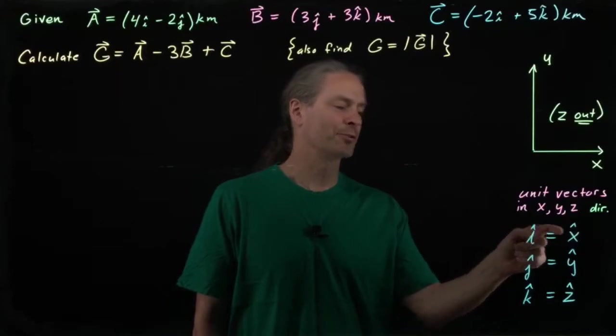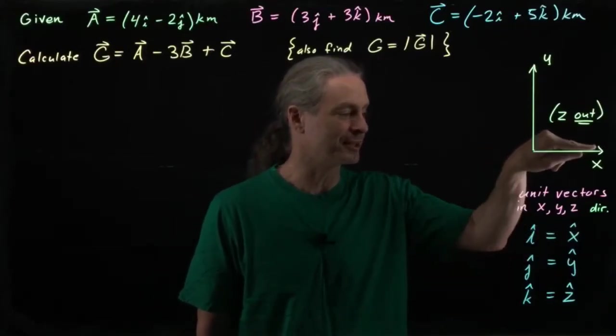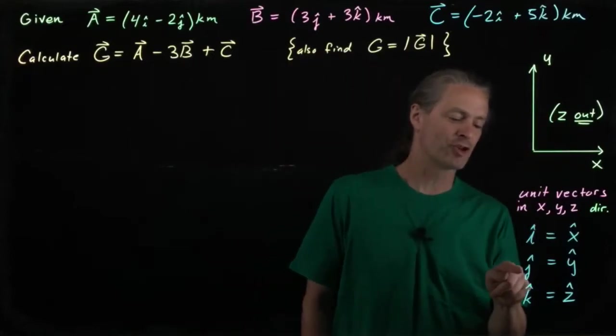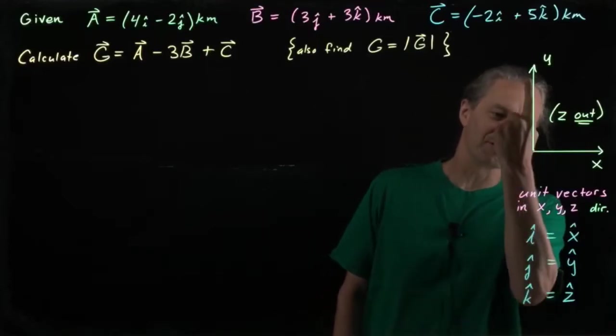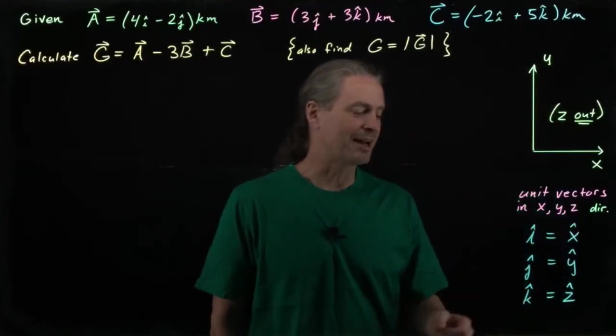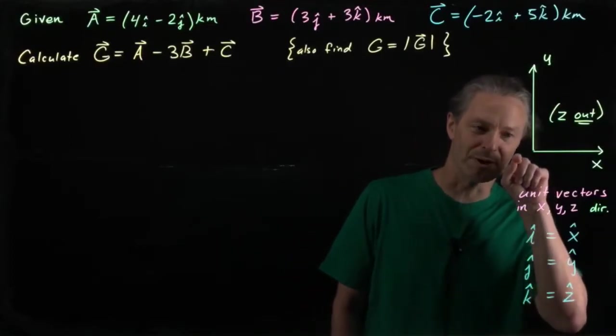So i-hat, or equivalently x-hat, is a vector of magnitude 1 pointing in the positive x direction. j-hat, or equivalently y-hat, is a vector of magnitude 1 pointing in the positive y direction. And k-hat, or equivalently z-hat, is a vector of magnitude 1 pointing in the positive z direction.